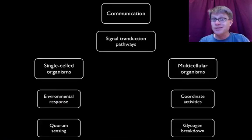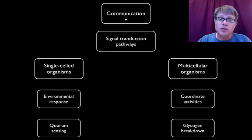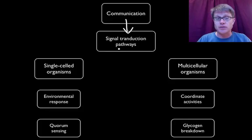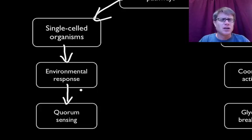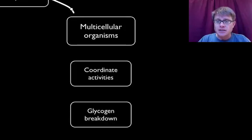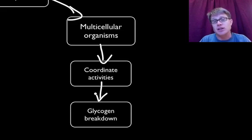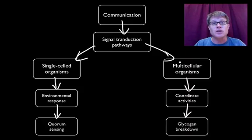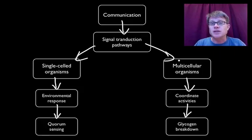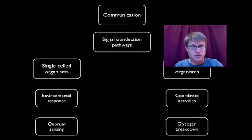In this video I'm going to talk about two things: how communication through signal transduction pathways is conserved through evolution. In single-celled organisms it's a response to the environment — the example is quorum sensing, how bacteria can tell other bacteria how crowded it is. In multicellular organisms, the example is how epinephrine is linked to glycogen breakdown and release of glucose. Even though these are two separate pathways, the signal transduction mechanisms are almost identical, meaning they've been around a long time and co-opted for different uses.